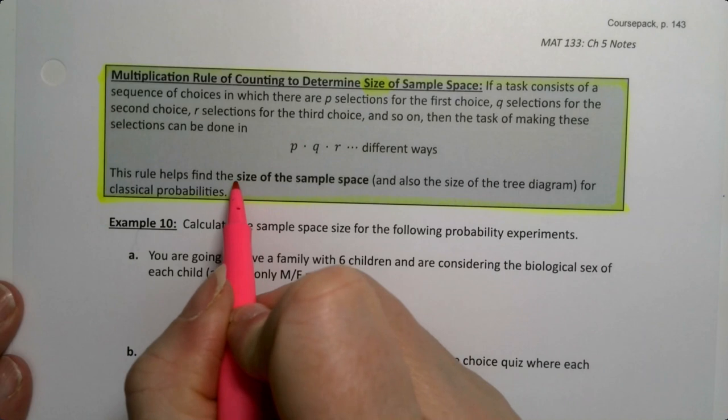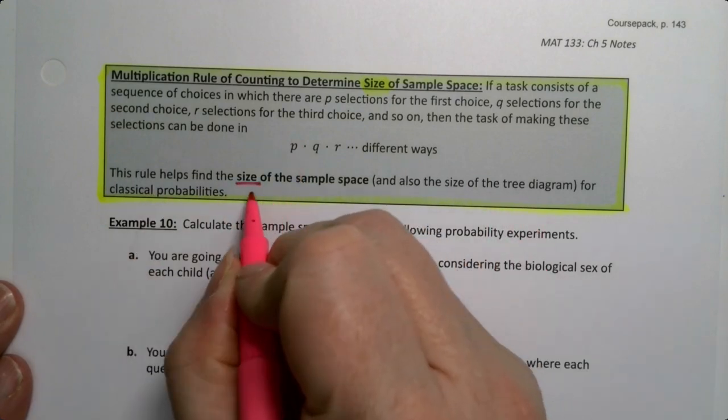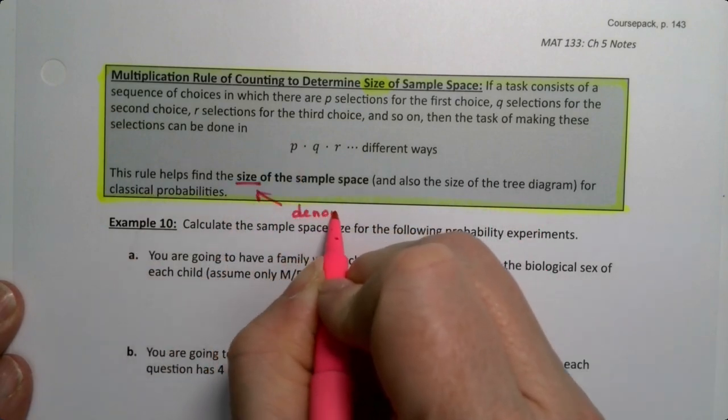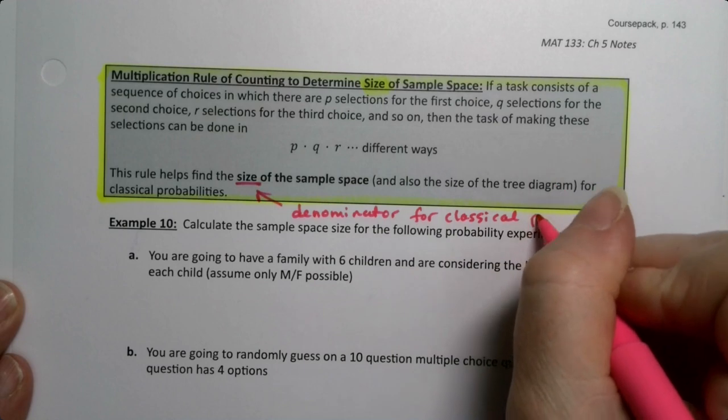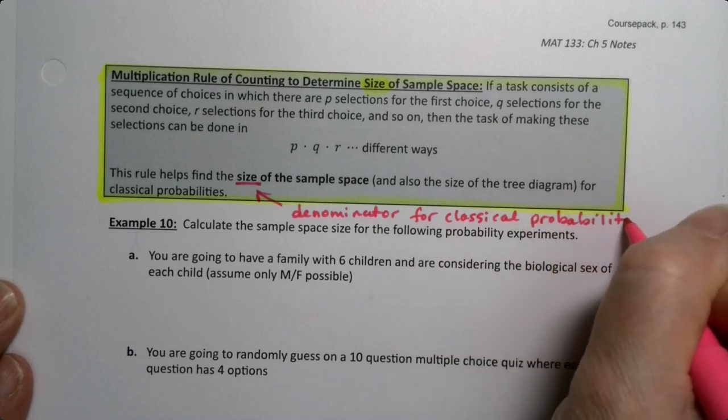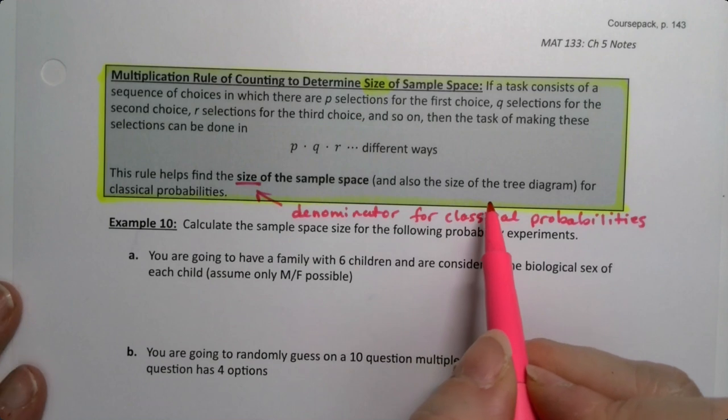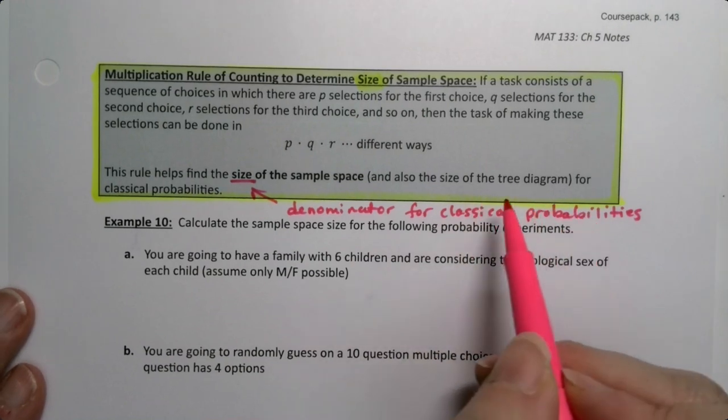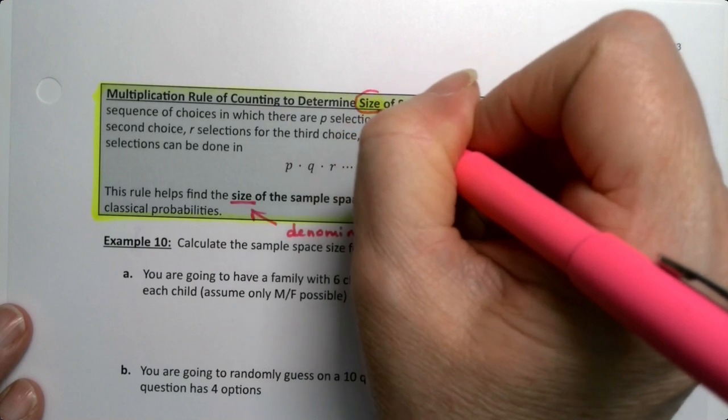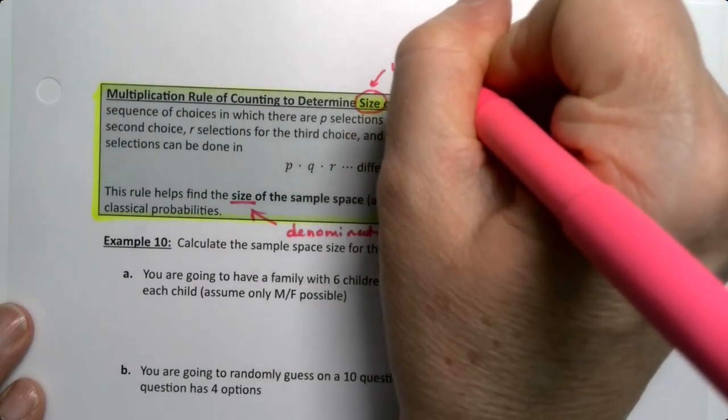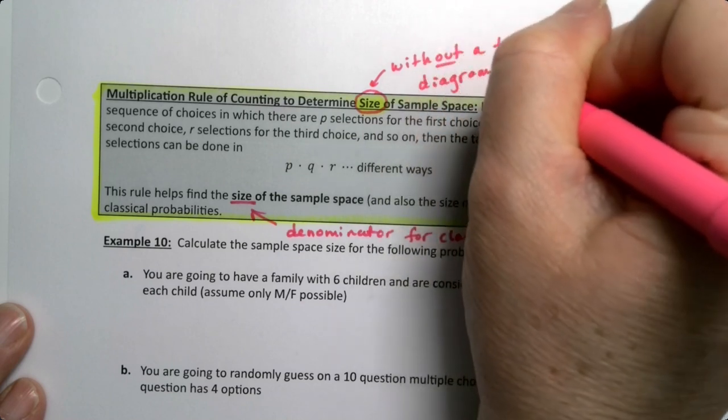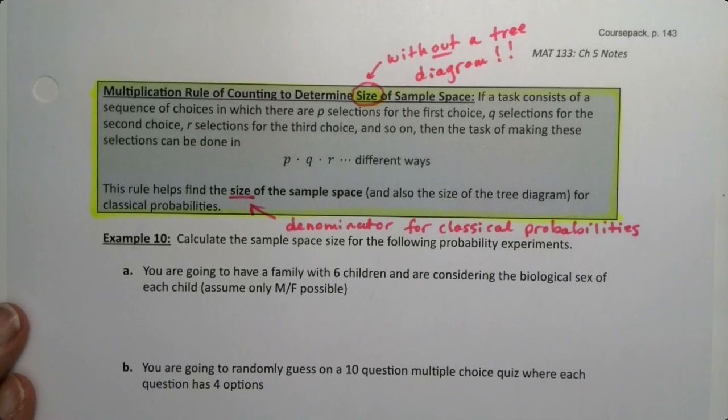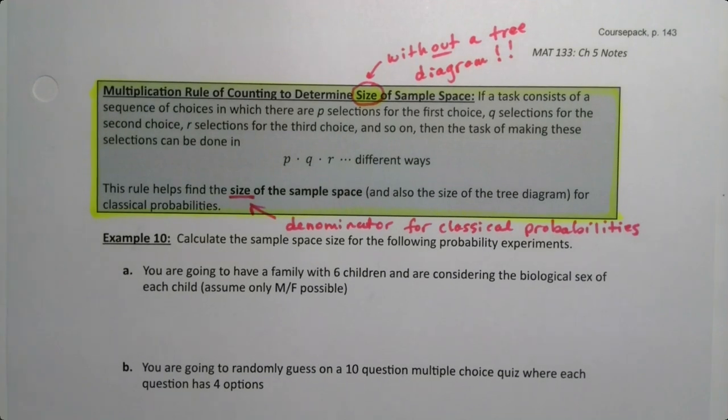The size of the sample space is the denominator for classical probabilities. It's the size of the tree diagram as well, how many branches you'd end up with at that last step. So it lets us figure out the size of the sample space without a tree diagram. This will let us find the denominator for those classical probabilities. So how are we going to do it?